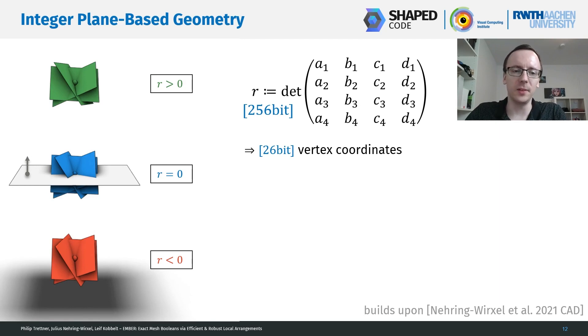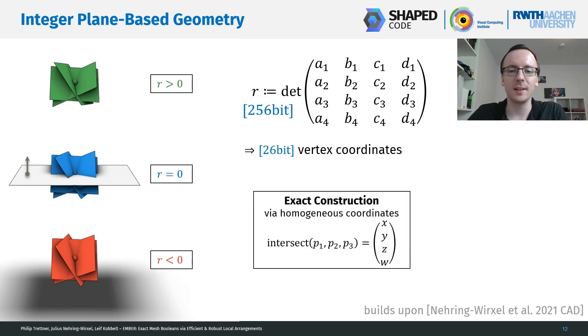And one of these optimizations actually yields an exact construction for intersection points. As it turns out, if we take three planes, like these three, and intersect them, we can actually represent the intersection point with integer coefficients if we treat that as a 4D homogeneous coordinate vector. And each of these coordinates turns out to be a 3 by 3 sub-determinant of this 4 by 4 matrix.